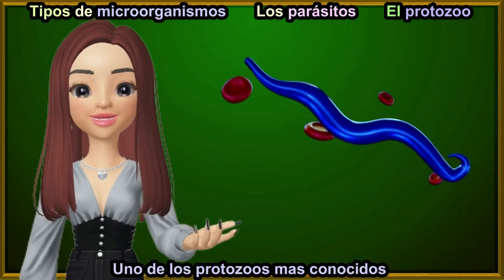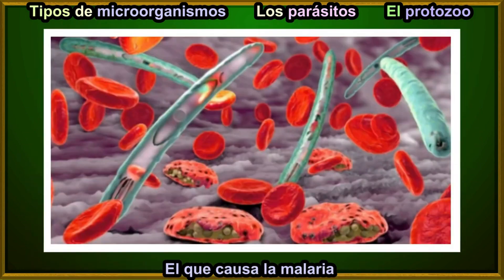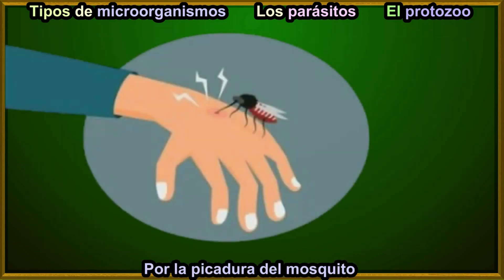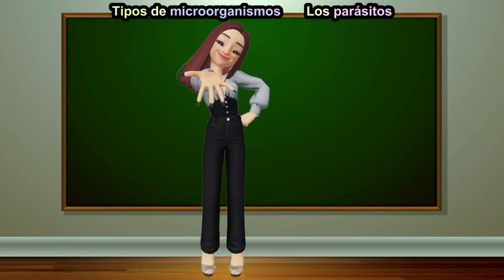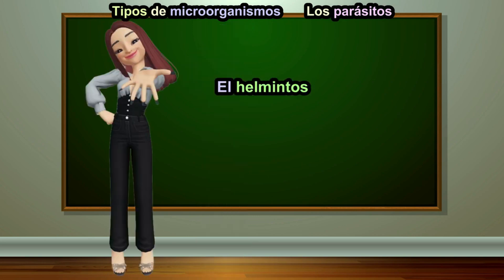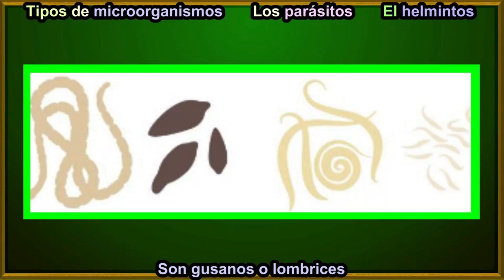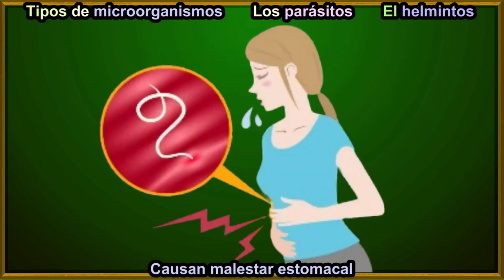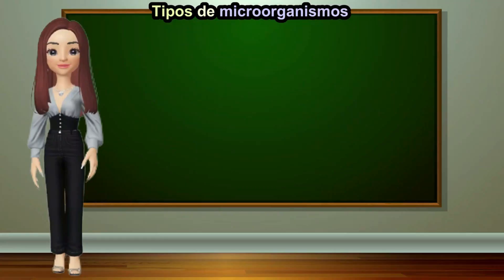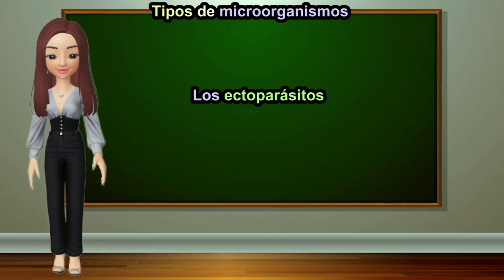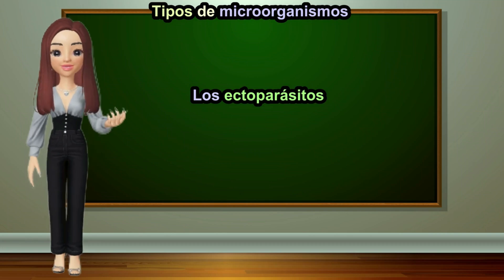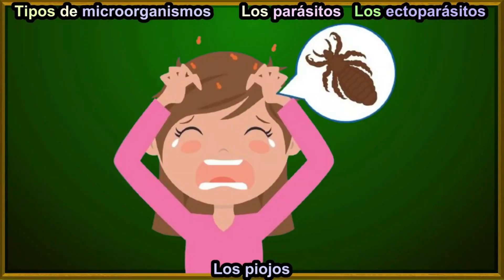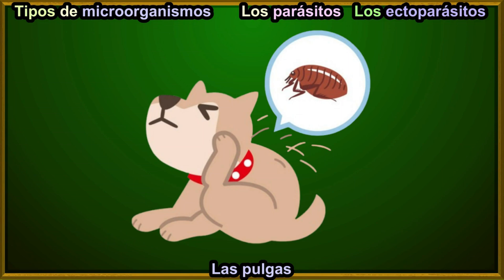One of the most well-known protozoan diseases is malaria, which is transmitted by a mosquito bite. Another type of parasite is the helminth — worms which have the ability to live in our intestines and cause stomach discomfort. Another type is known as ectoparasites: parasites that live outside the body, such as lice or fleas.